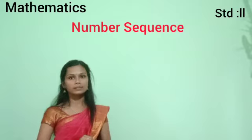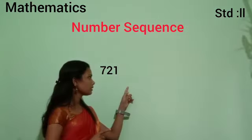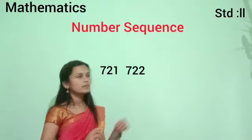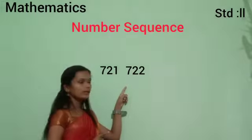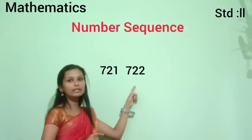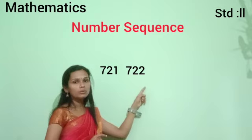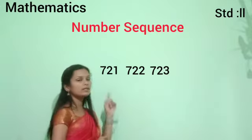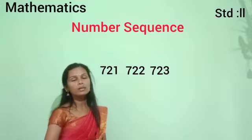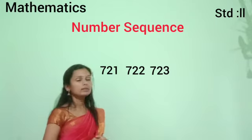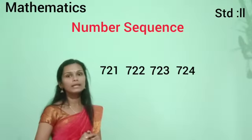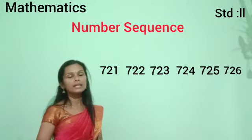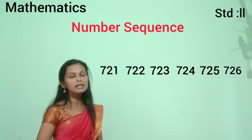Now we have to complete this number sequence: 721, 722. After that, which number do we write? Yes, 723. So: 721, 722, 723, then 724, then 725, 726. Like that, we have to complete this number sequence.